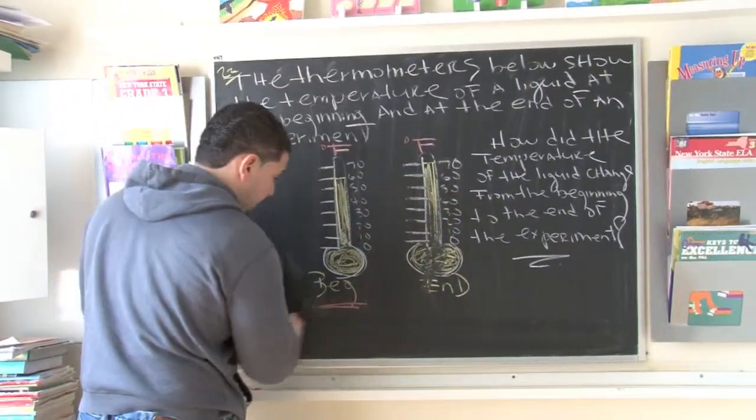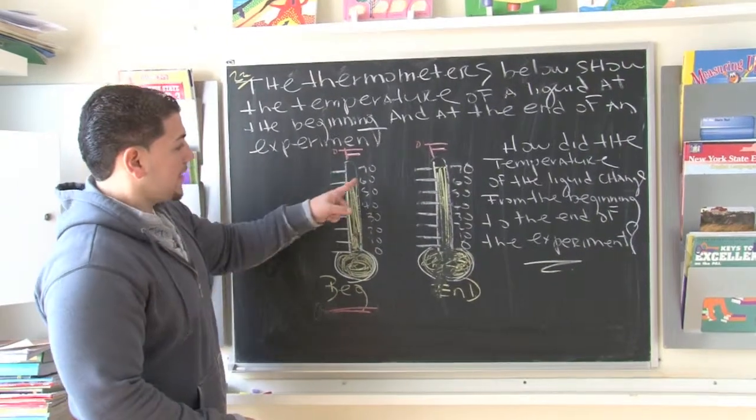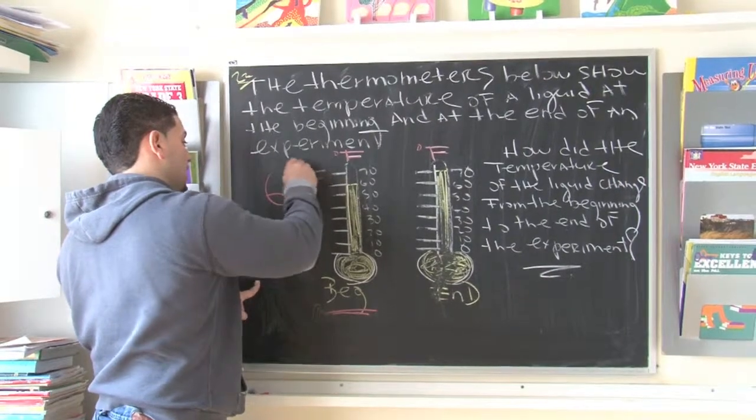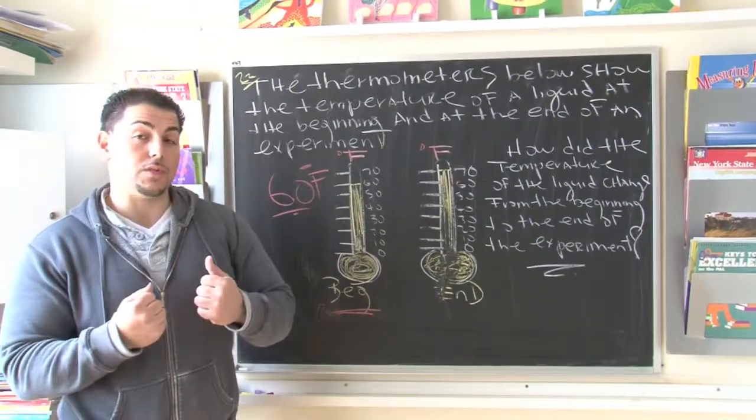So if you look at the beginning, the thermometer reads 60 degrees Fahrenheit. So it's 60 degrees Fahrenheit here. This is before we do the experiment.